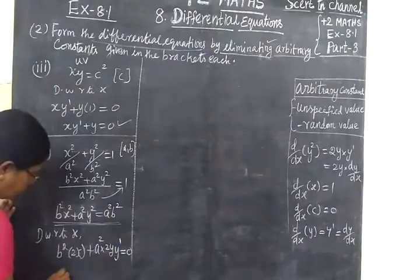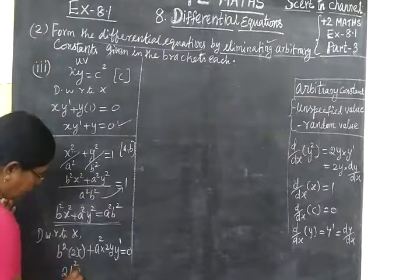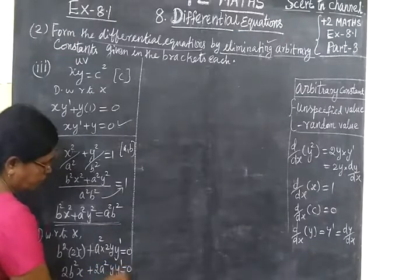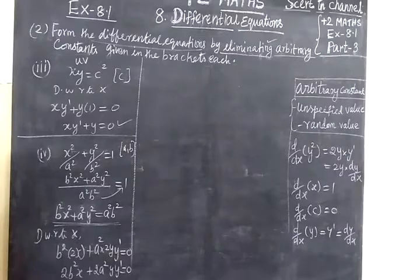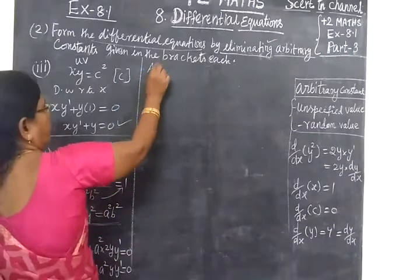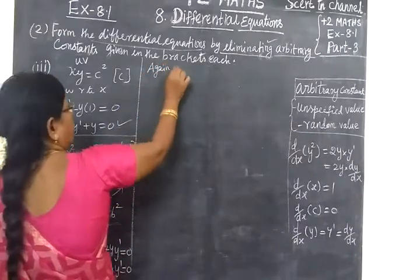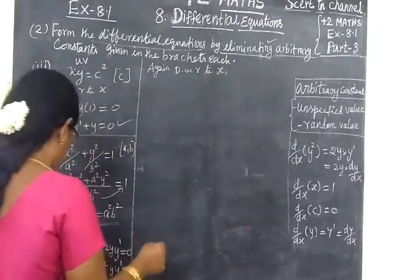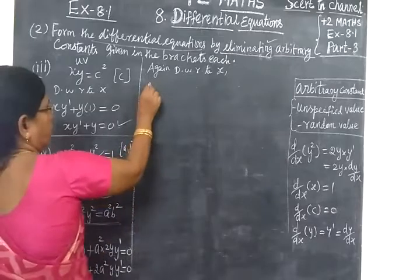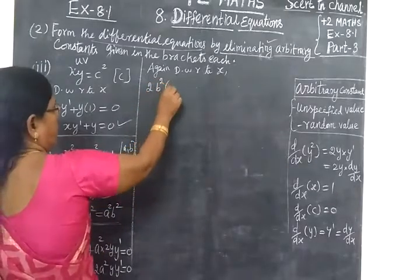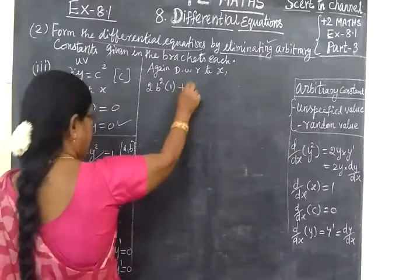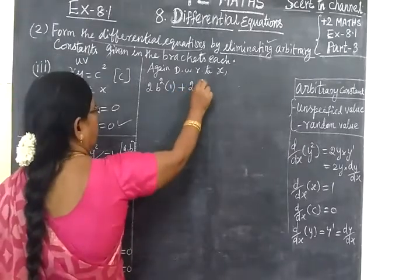So we write it as: B squared x squared plus A squared y squared equal to 0. Now again differentiate with respect to X. Differentiating gives 2B squared x equal to 0, and equal to A squared.